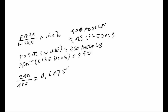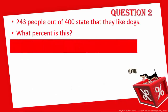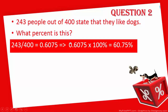That decimal is not our percent yet. We don't have the percent until we either multiply it by 100 or move the decimal point over two places and put on the percent sign. Either way, we get 60.75%. So of the people who were polled or interviewed, 60.75% stated they liked dogs.